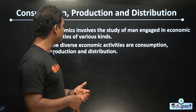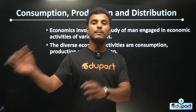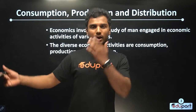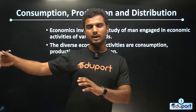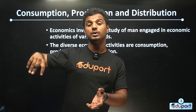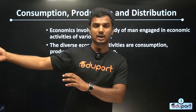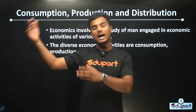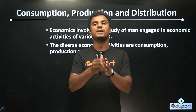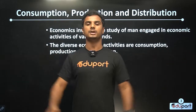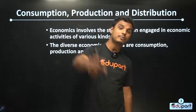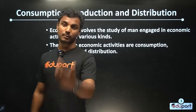First, we will produce — that is input and output, the process of production. Then we consume: we use the full utility of that produced output — that is consumption. That consumption generates monetary gain, and that income we will be distributing across the factors of production. That process is called distribution.